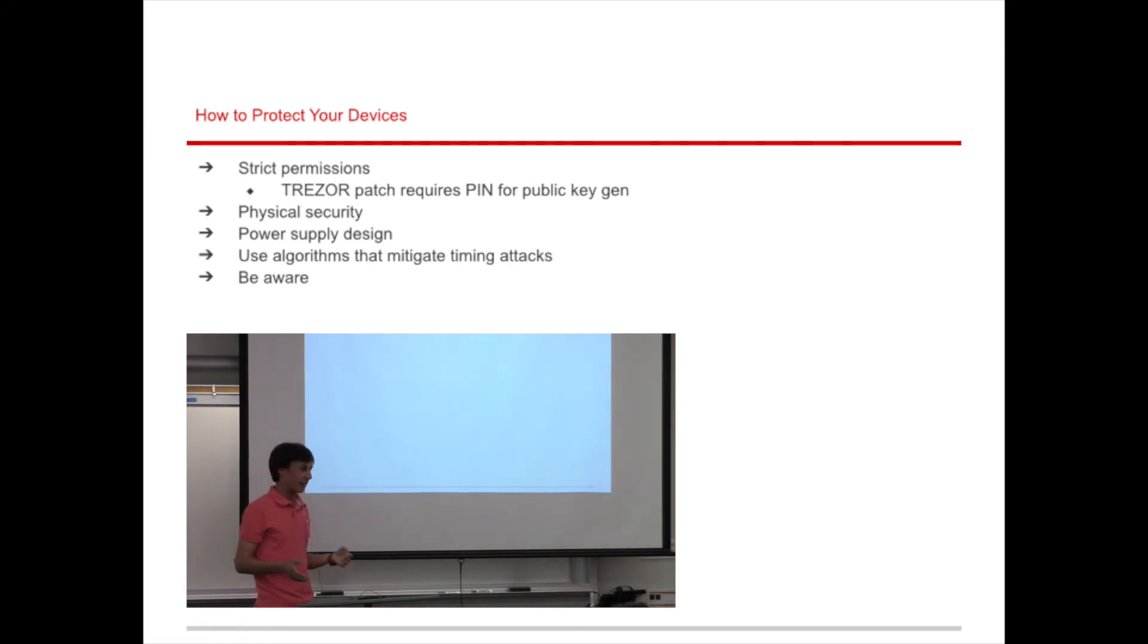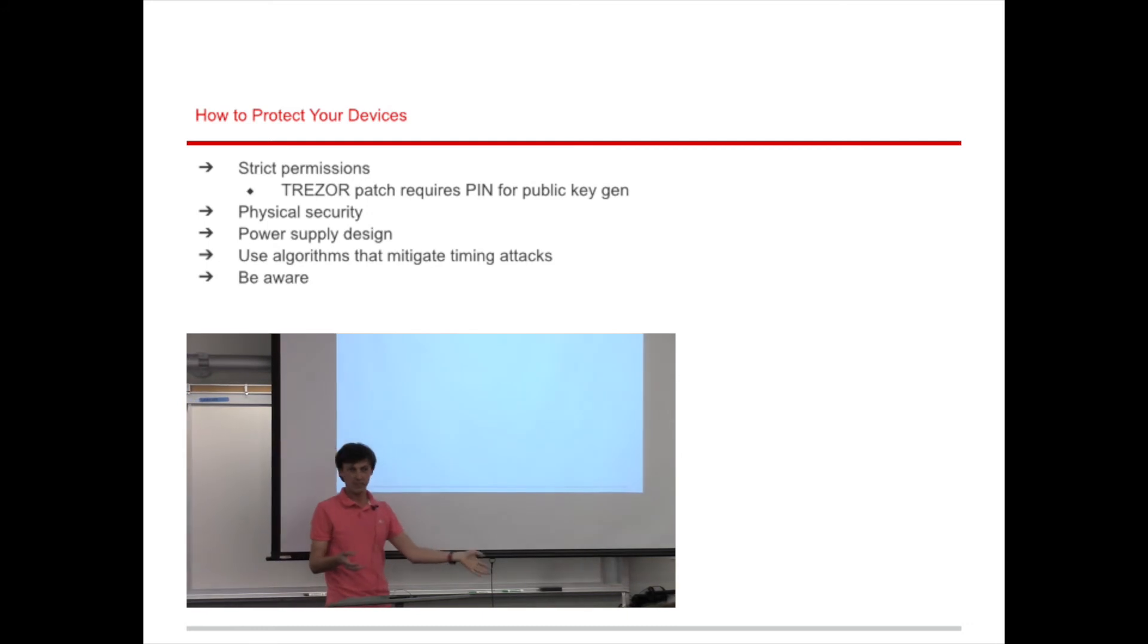So what can we do about the fact that just plugging into the wall leaks information about what the device is doing? Well, first is use strict permissions in the design of the device that you're developing. In the case of Trezor, the patch for the device was to require authentication in order to compute a public key. So when they did that, as soon as you tried to extract the private key by measuring the power consumption during the public key computation, you were automatically at least consenting to leaking that information. So a third party attacker couldn't come along and pick up the device that wasn't theirs and compute a public key and extract the private key just on their own. They had to at least coerce someone into computing a public key. And on top of that, if you can break authentication of your device, then you've already been compromised. If you can break authentication, then you can do other things too.